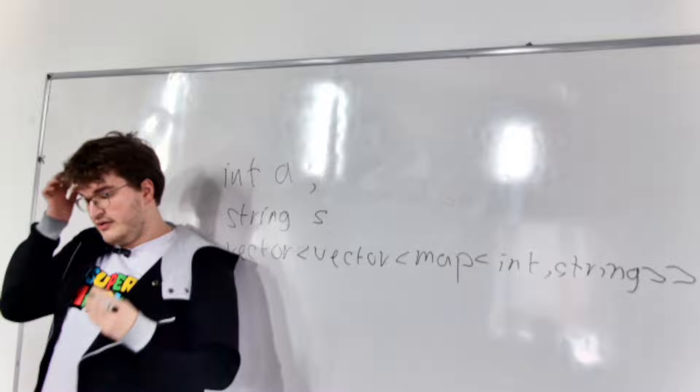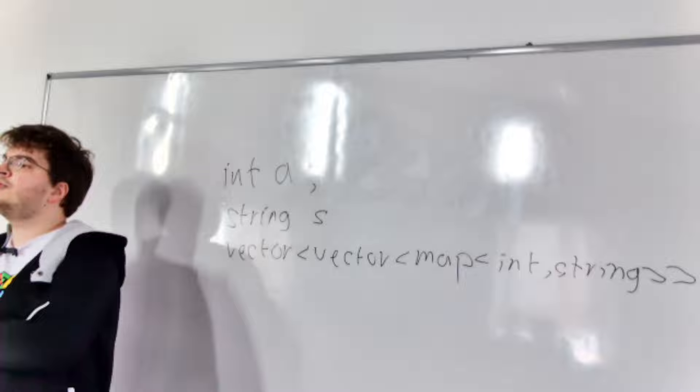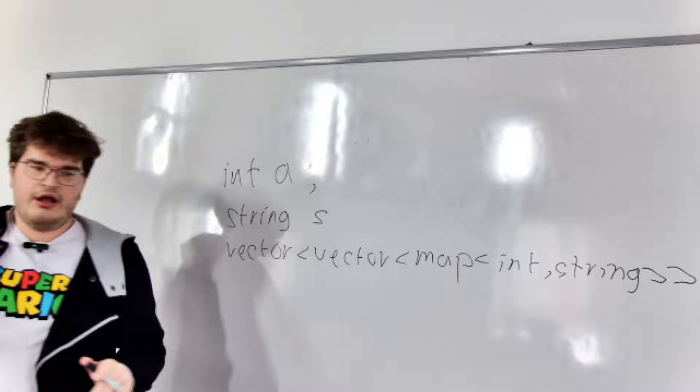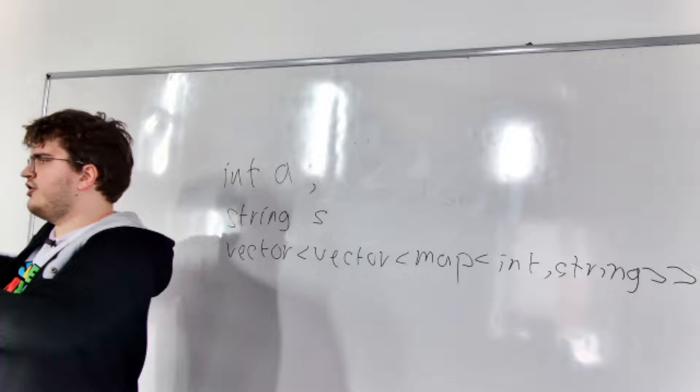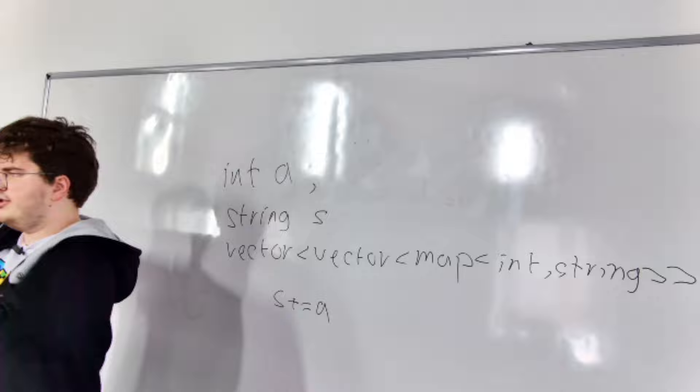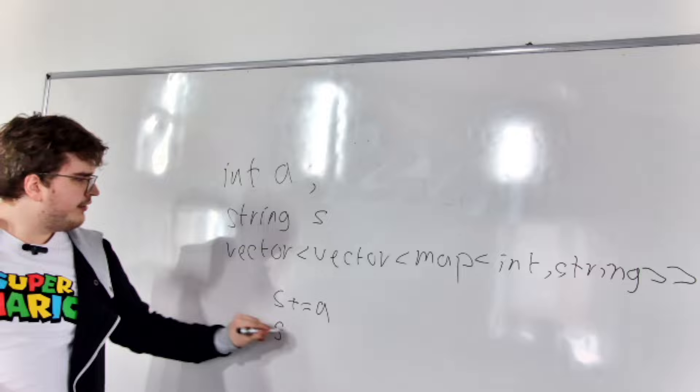Variables can only interact with other variables they know how to handle. Integers know that if they interact with other integers, they can add, subtract, multiply, and so on. Strings know that if I add an integer — something like `s += a` — it does concatenation, so the integer gets added to the end of the string.